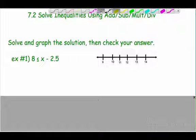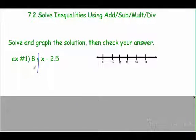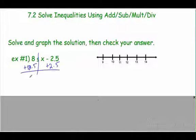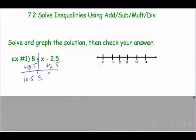I want to get x by itself. What's bothering x? Minus 2 and a half — so I want to do the opposite of that. I want to add 2 and a half to both sides. 8 plus 2 and a half is 10 and a half. 10 and a half is less than or equal to x — these cancel out and we have x.